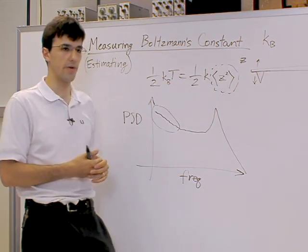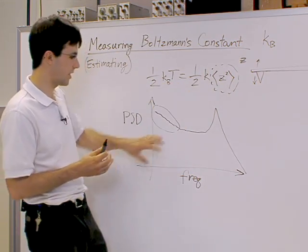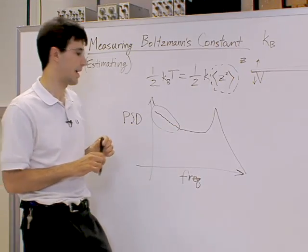If you remember Parseval's theorem, that relates the frequency domain content of a signal to its time domain power. Basically, if you integrate this PSD, you'll get the mean square displacement. Essentially, anything you see here will also be included in the mean square displacement. So this is not the most accurate way to do the measurement we want to do.